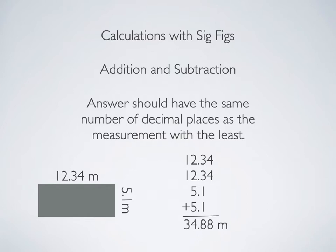This measurement, 12.34, has four significant digits, and the four is the estimated digit. 5.1 has two significant digits, and the one is the estimated digit. As we look across the bottom here, 34.88, we need to think about which of these numbers are estimated and which are certain.